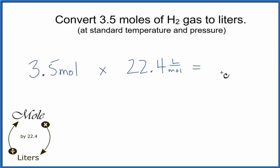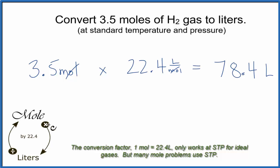Do the math. 3.5 times 22.4, 78.4. And moles do cancel out, so we're left with liters. So to go from moles to liters, we multiplied by 22.4. If we had liters and we wanted to go to moles, we would divide by 22.4.